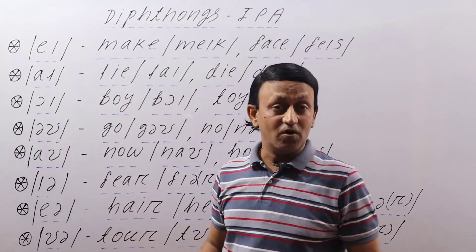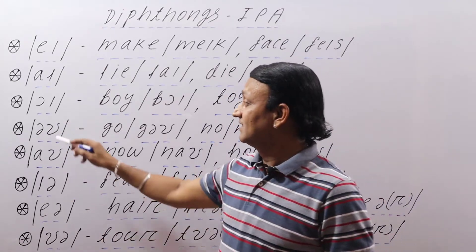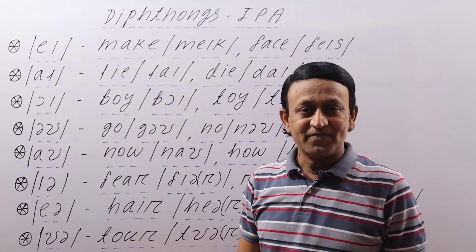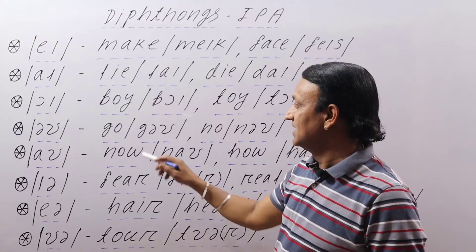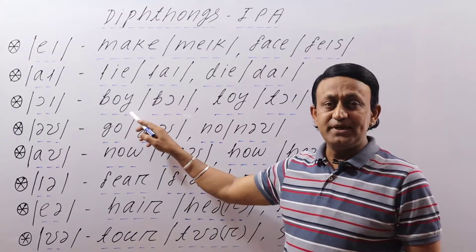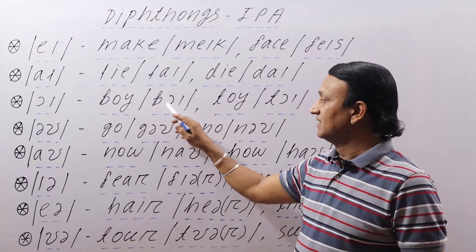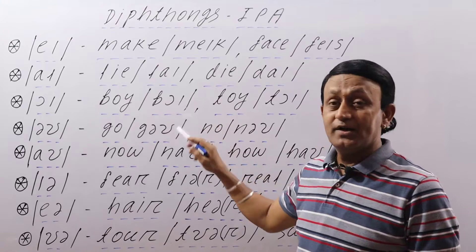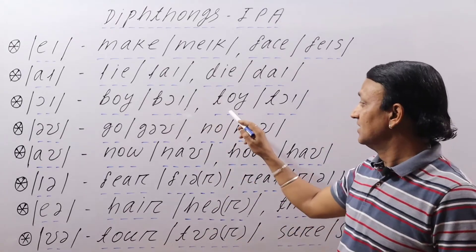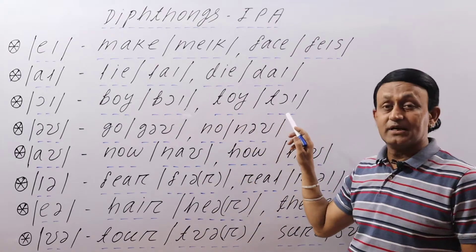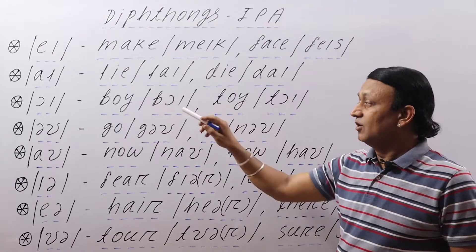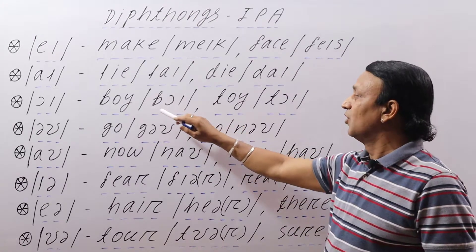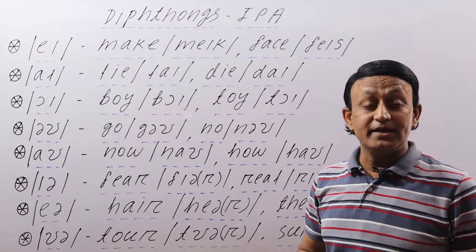The third sound is /ɔɪ/. This is the O sound and the short E sound — /ɔɪ/. In words like 'boy': B-O-Y is the spelling, B plus /ɔɪ/ becomes 'boy'. Similarly in 'toy', T plus /ɔɪ/ becomes 'toy'. So the /ɔɪ/ sound is heard in these words: boy, toy, enjoy, employ — there can be numerous words.